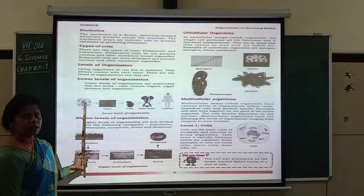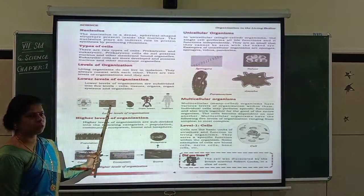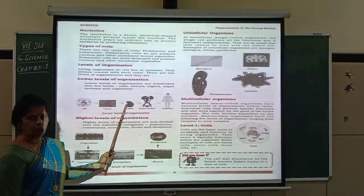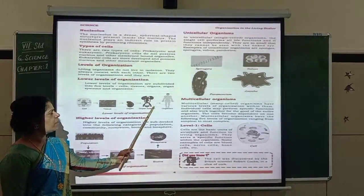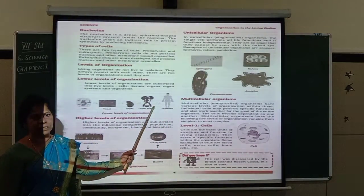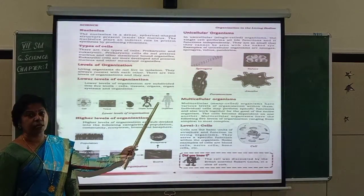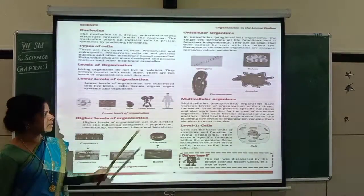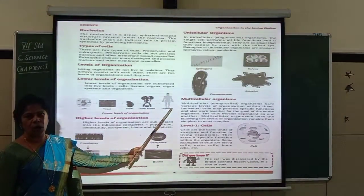A group of organs of the same type join together to form an organ system. Many organ systems exist in our body — the circulatory system, respiratory system, digestive system, and so many others, each consisting of different organs. When all of these are put together, they form an organism.